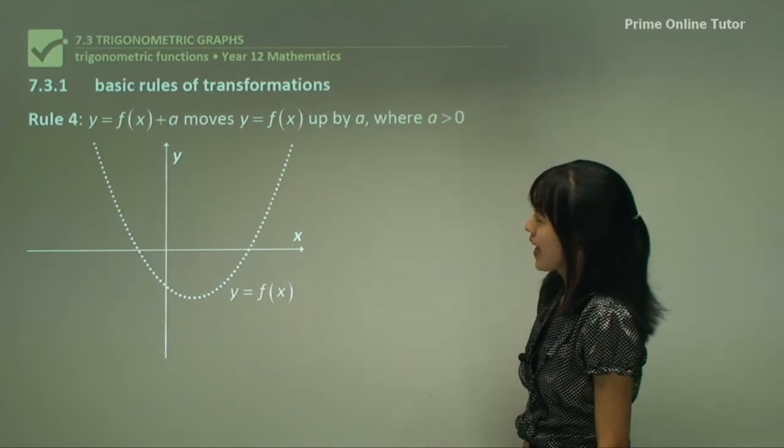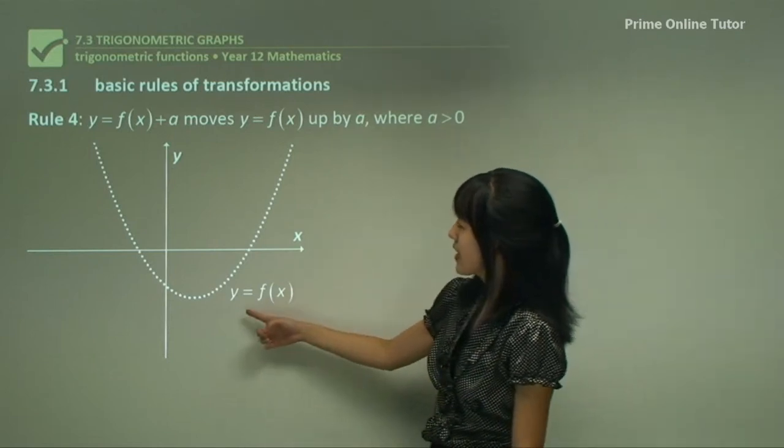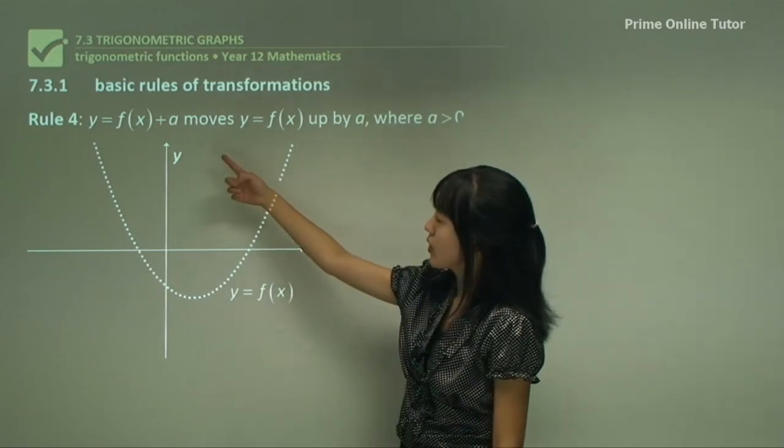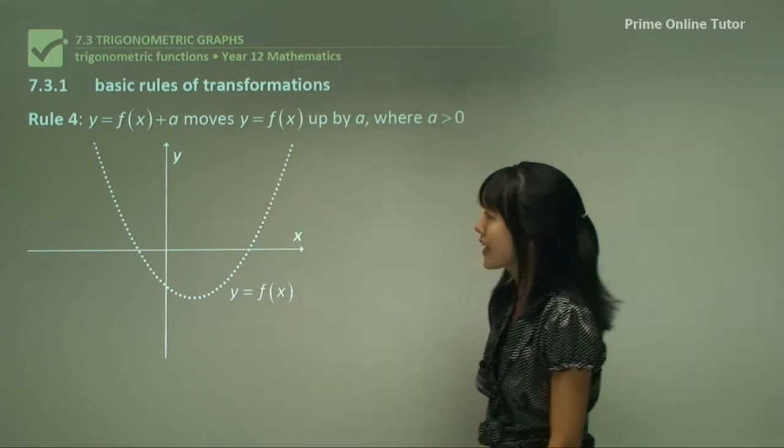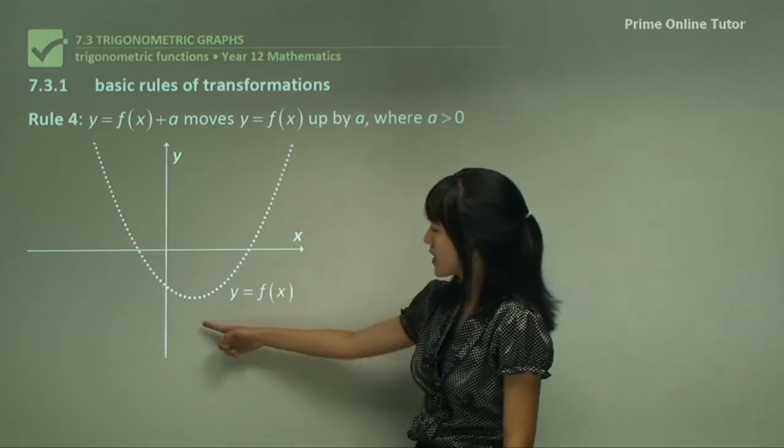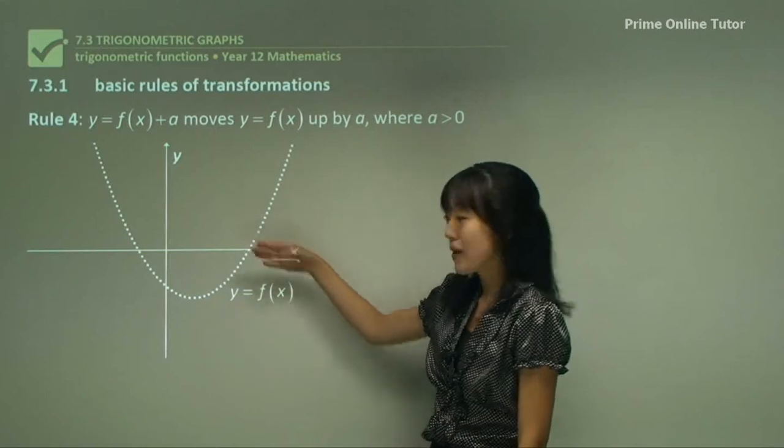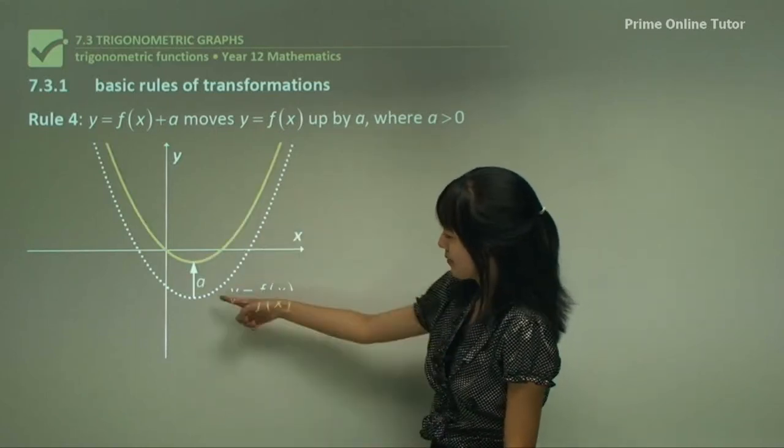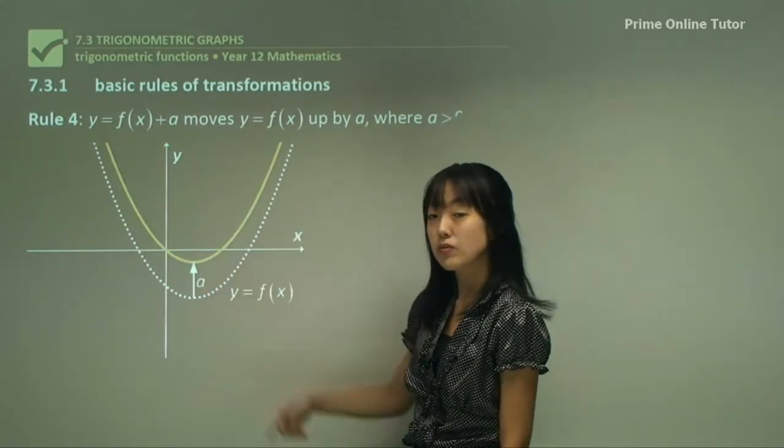Rule four, we have f of x. This one we want to transform is y equals f of x plus a. This means that this f of x graph moves up by a as shown here. The y value moves up by a.